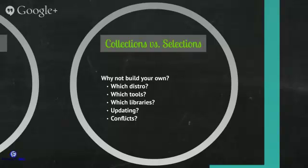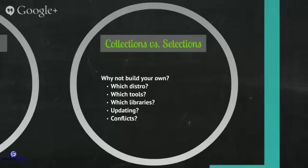First, you've got to decide which Linux distribution you're going to base off of. You could start with just a kernel and build up from there, but most people start with something like Ubuntu — I've even seen someone build a pen testing distribution on CentOS. Debian is an option too. Each one has slightly different ways of functioning, different features, different pre-installed packages and available packages that may or may not be available for the others.